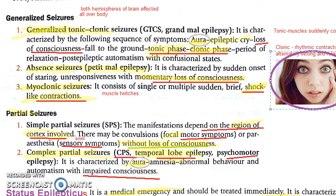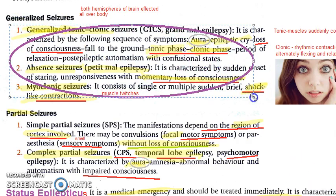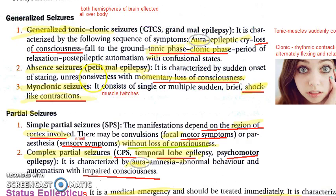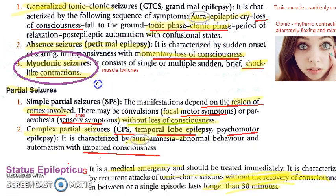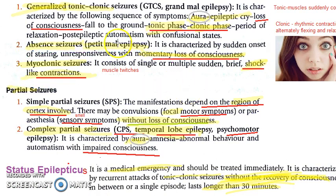Coming to absence seizures — please look at this: there is staring, unresponsiveness, and momentary loss of consciousness. Both generalized tonic-clonic and absence seizures involve loss of consciousness. In myoclonic seizures, you have single or multiple muscle twitches.